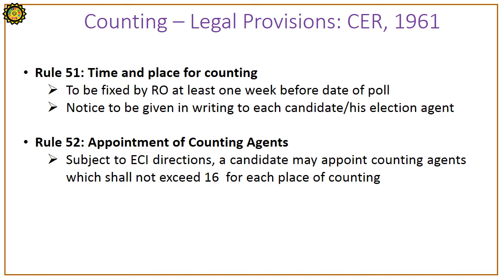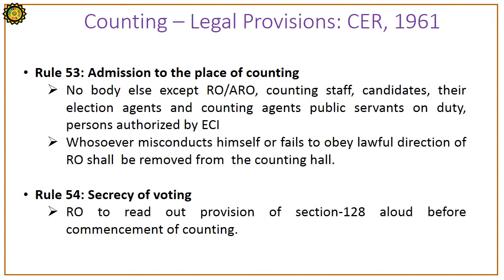Under the Conduct of Election Rules 1961: Rule 51 is about the time and place of counting to be fixed by the Returning Officer at least one week before the date of poll. Notice to be given in writing to each candidate or election agent. Rule 52 is about appointment of counting agents: subject to ECI directions, a candidate may appoint counting agents which shall not exceed 16 for each place of counting.